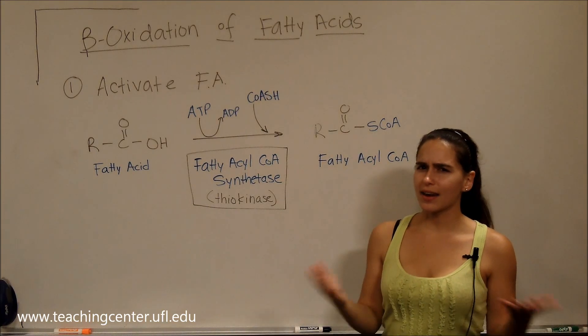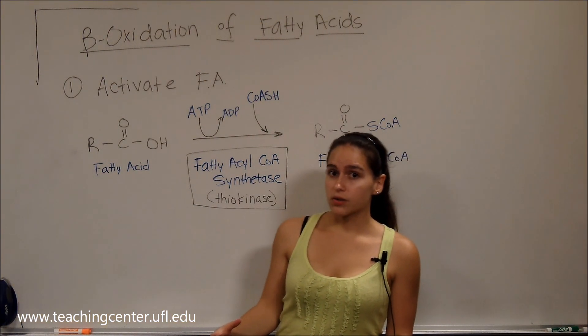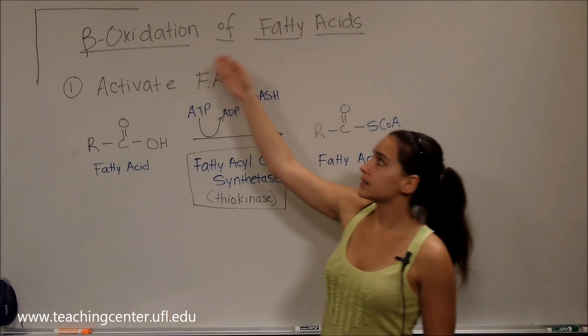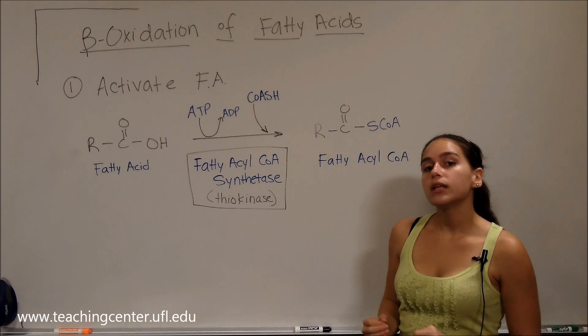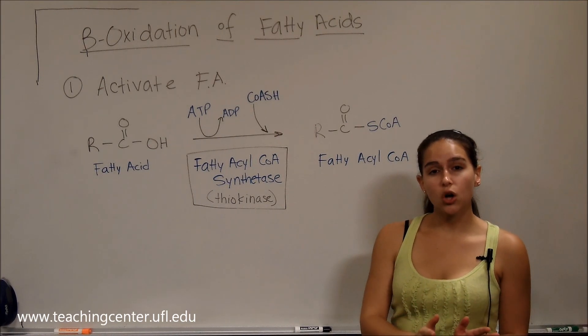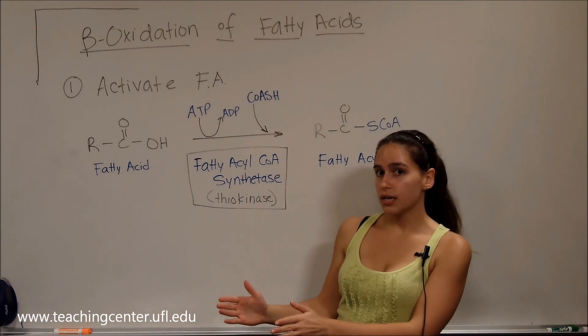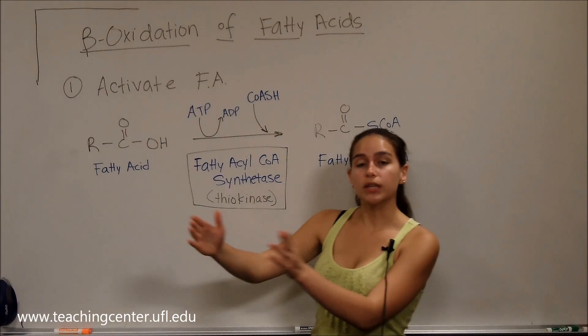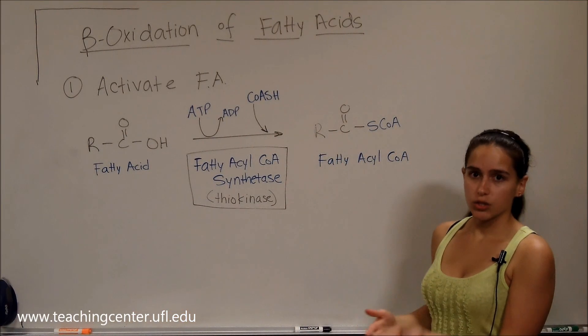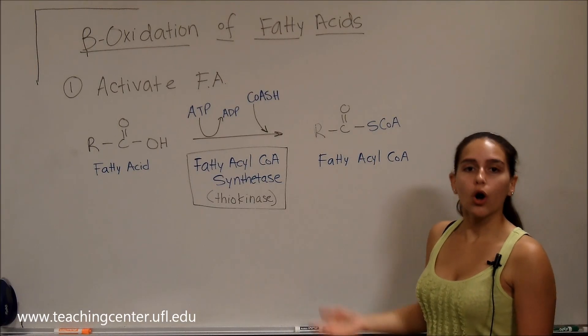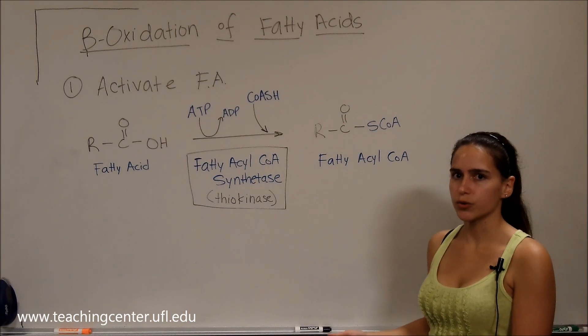Now you may be wondering where does that fatty acid go that we broke down from the triglycerides? It actually undergoes beta oxidation. That means it's going to be fully oxidized into acetyl CoA, and the acetyl CoA are going to go into the TCA cycle, yield those NADHs and FADH2s, which are going to go into the electron transport chain and yield ATP. However, through beta oxidation, as we're going to see, we also yield NADHs and FADH2, which will also go into the electron transport chain.